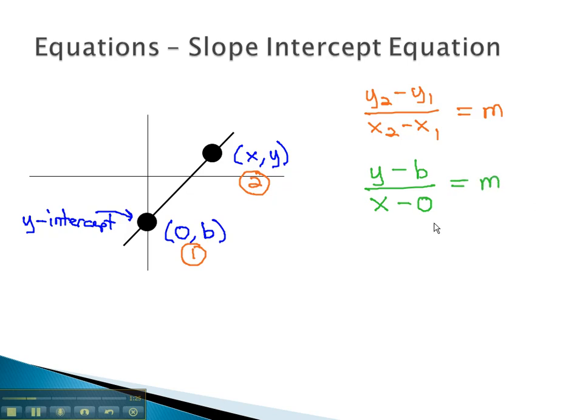Notice in the denominator, x minus 0 is the same as just saying x. What we will do with this equation is we will solve it to get the variable y all alone. We do this by first multiplying by x to clear the fraction. y minus b equals mx.